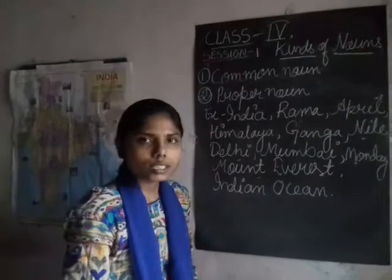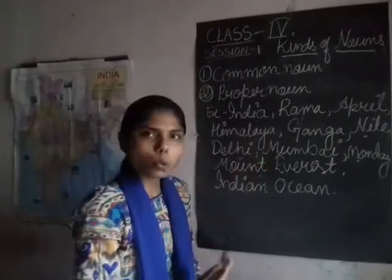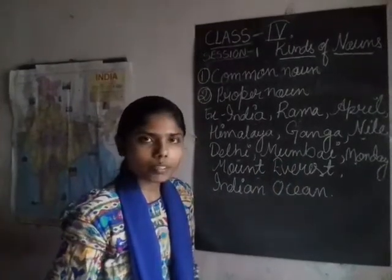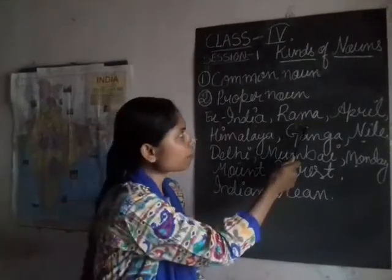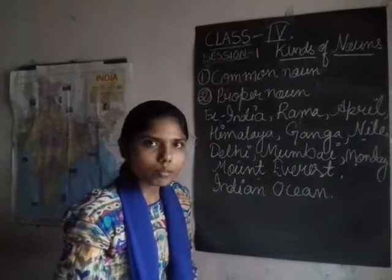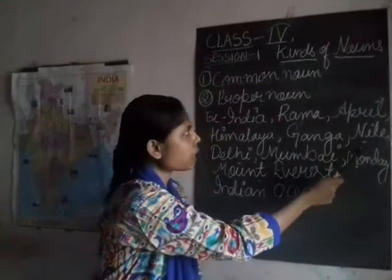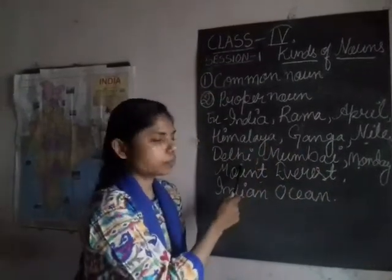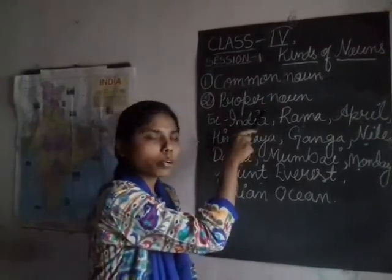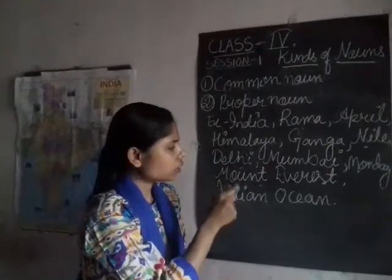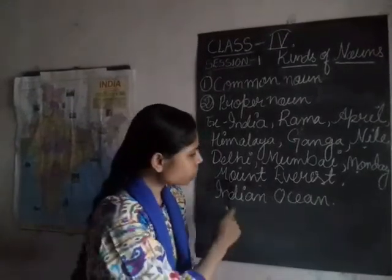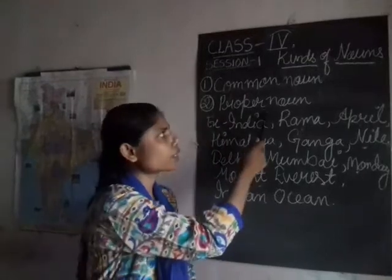India is our country, so India is a proper noun — there is no another India. Rama is my best friend, so Rama is a proper noun. Nile is the longest river in the world, there is no another Nile, so Nile is a proper noun. Delhi is the capital of India, so Delhi is a proper noun. Mount Everest is the highest peak in the world, so Mount Everest is a proper noun.